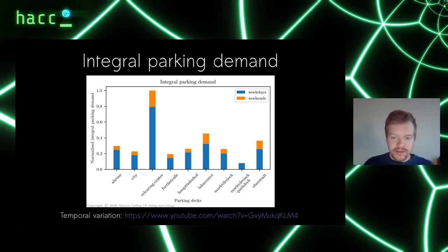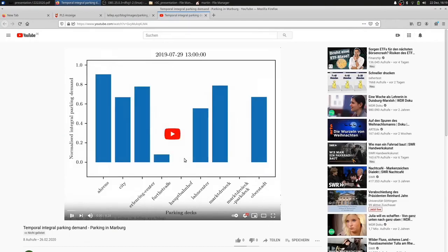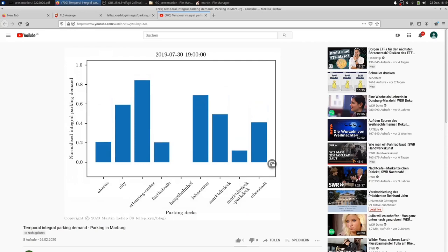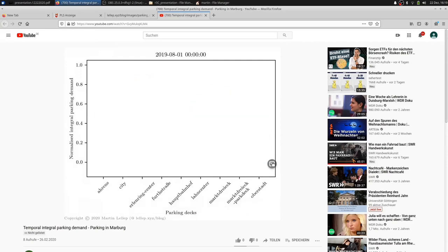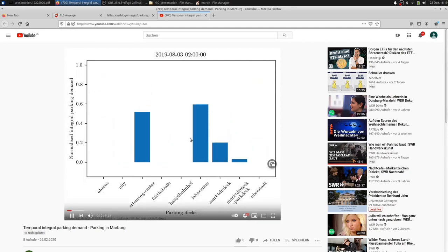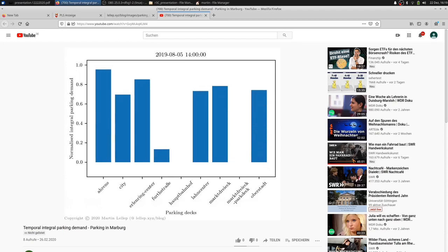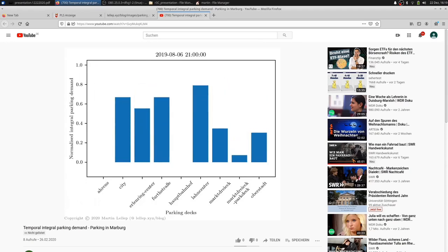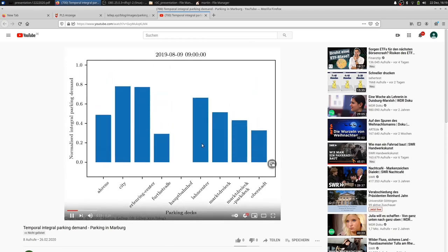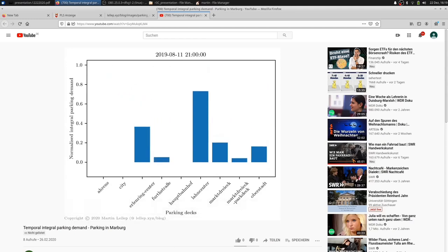There's a temporal version also where I rendered a small video. You can see essentially the same as the previous graph but against time. Again, it's very apparent there's a periodicity. Here my scraper crashed, it gets back in business again. I found it interesting to see that there are parking decks that host cars even at night, for instance the Erlenring Center and the Lahncenter, the largest ones. They offer parking overnight and there are some cars in there, probably.